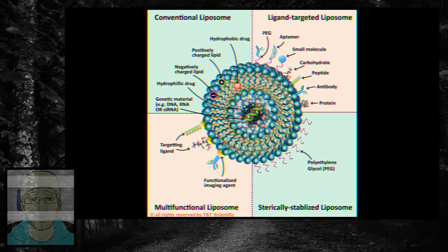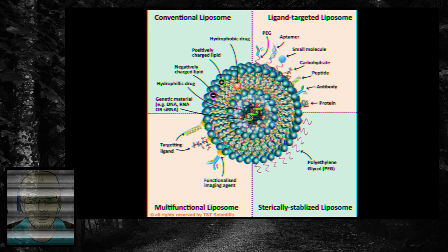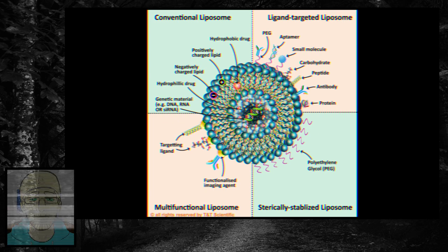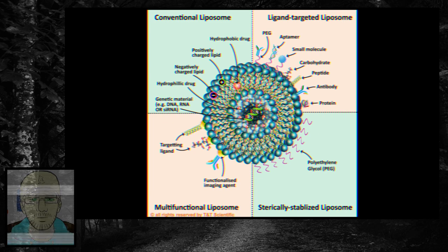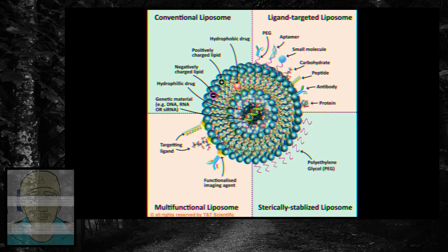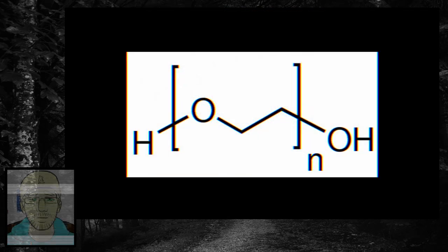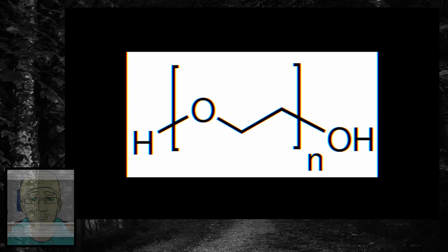That brings us to the next term, lipid nanoparticles. These are basically tiny balls of fat, used in mRNA vaccines to protect delicate RNA molecules, so the vaccine can enter the human body without being destroyed. Lipid nanoparticles have been recognized as potential drug delivery systems since the 1960s. Lipids are fatty, oily or waxy, and include fats and oils, waxes and steroids, among other things. Sometimes, a compound called polyethylene glycol, PEG, can be used to help keep lipid nanoparticles stable as they are used in the COVID-19 mRNA vaccine.